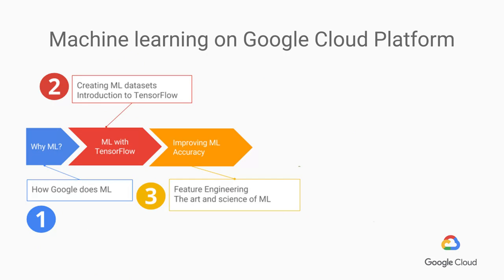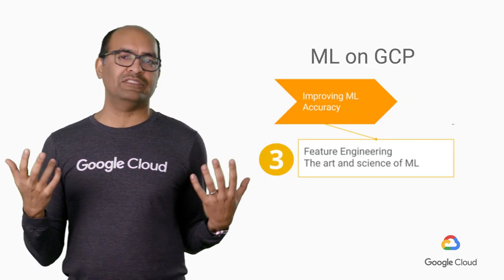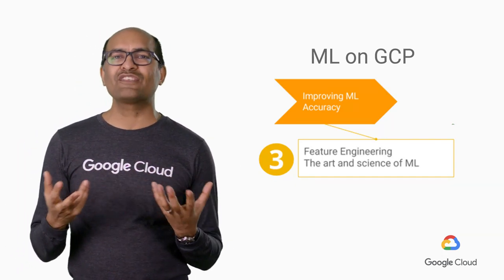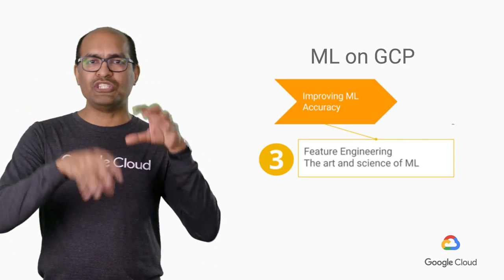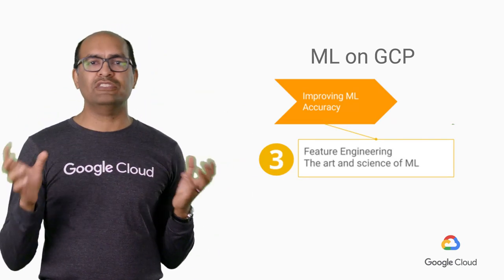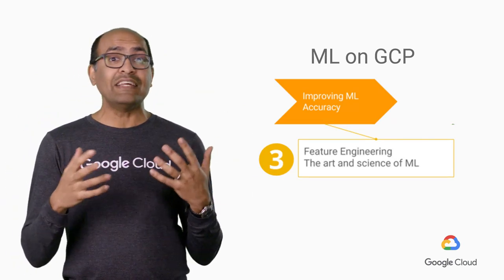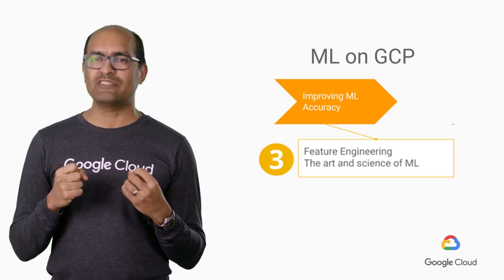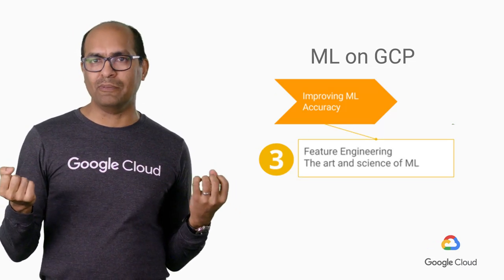Then we have two courses that are about improving machine learning accuracy. As you build your first machine learning model, you will learn that there are lots of things you can do to improve that model. Think of this section as filling your tool chest with a set of ideas — you'll use different ideas in different situations, and knowing them will be helpful in your career as you solve different machine learning problems.